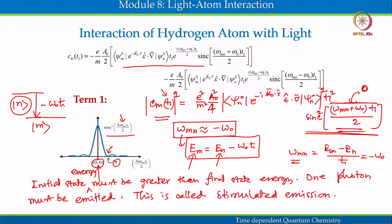The first term we obtained is indicating the behavior of stimulated emission. Stimulated emission is possible only when the argument within the cardinal sine function is very close to zero. If you consider it equal to zero, it means that one photon will be emitted.